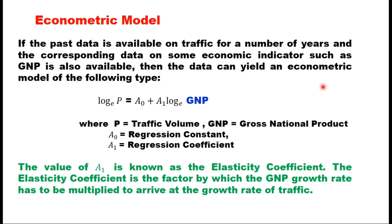The second model is the econometric model. If past data is available on traffic for a number of years and the corresponding data on an economic indicator such as GNP or GDP is also available, then this data can yield an econometric model of the form: log(P) = A0 + A1 × log(GNP), where P is the traffic volume, GNP is the gross national product, A0 is a constant, and A1 is the regression coefficient. A1 is known as the elasticity coefficient — the factor by which GNP is multiplied to arrive at the growth rate of traffic.